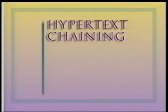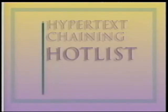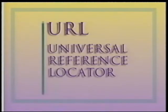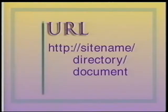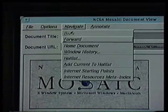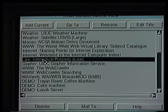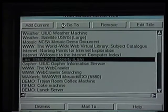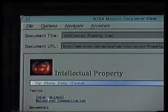Chaining from one document to another via a hypertext link can get somewhat tedious, so Mosaic has a hot list in which you can store the URLs — that is, the Universal Resource Locators — that describe the location of your favorite documents out on the World Wide Web. I'm going to use the hot list to go over to one of the intellectual property pages on the World Wide Web. This happens to be on a system in Austin, Texas, although I don't really need to know that other than to tell you for the purposes of this demonstration.